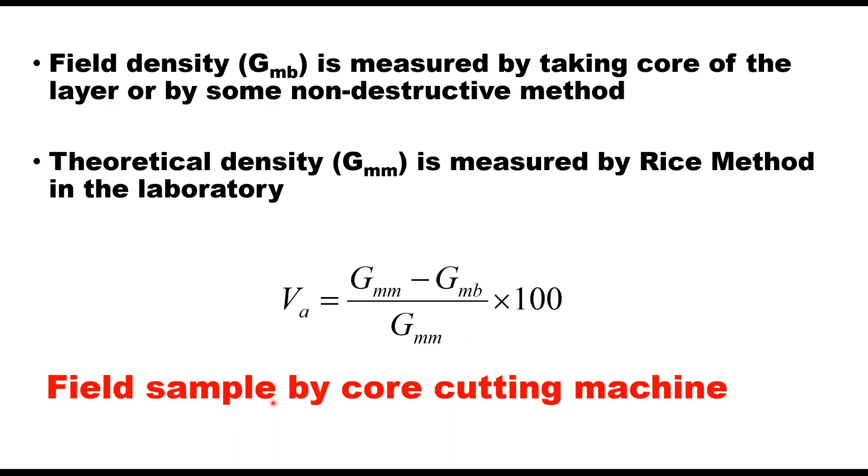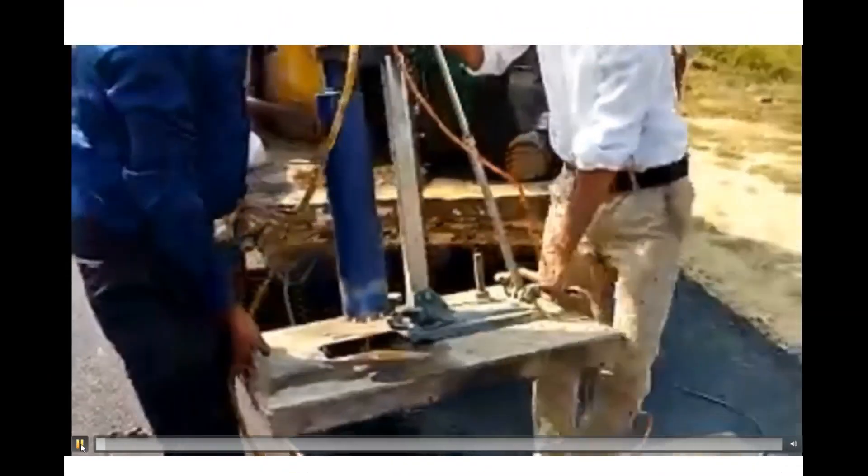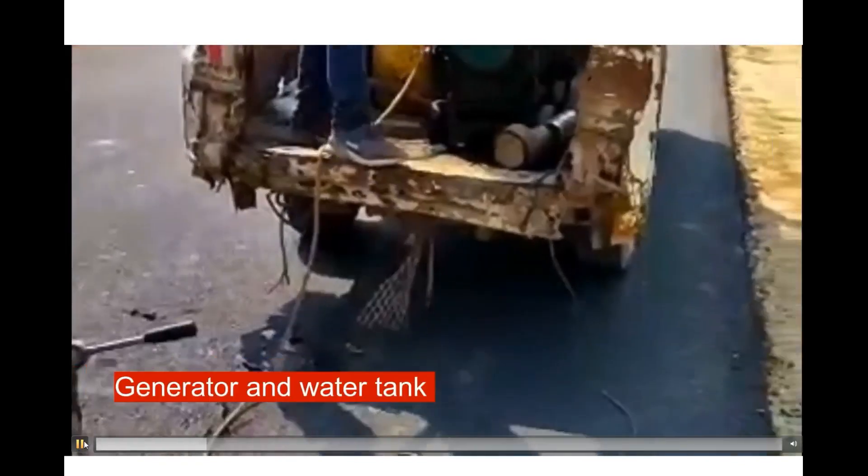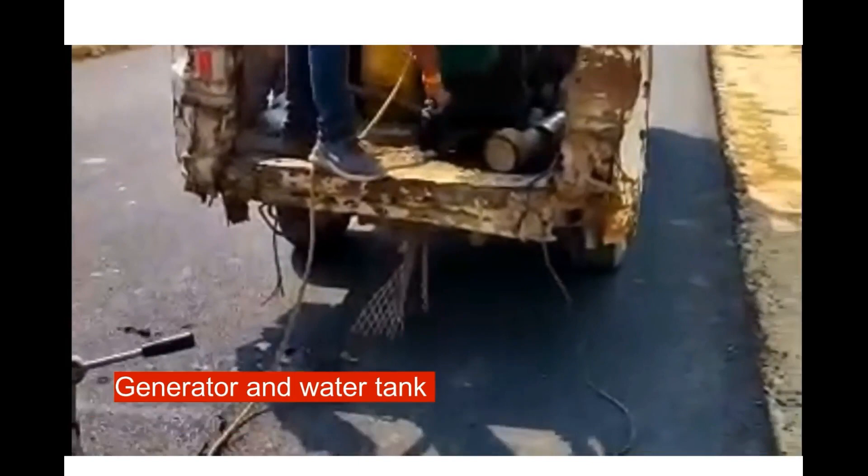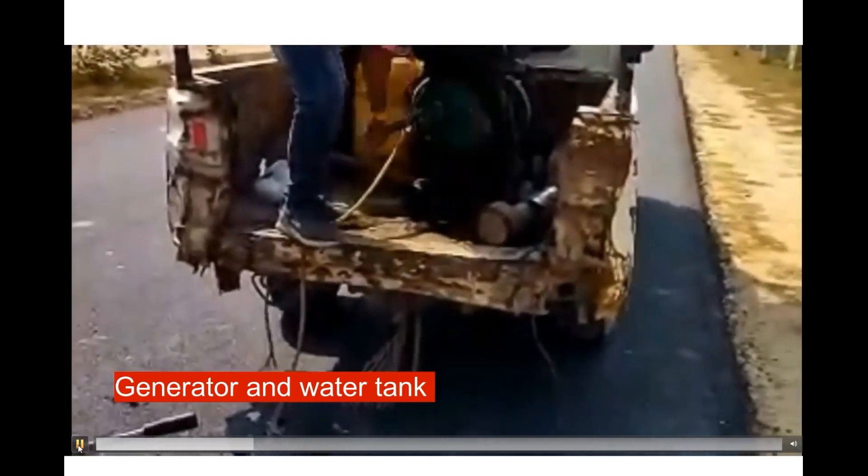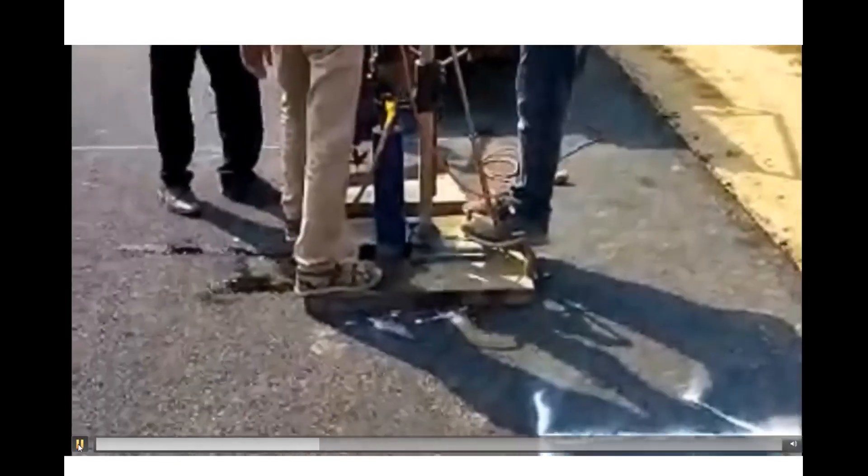Field sample should be taken as far as possible by core cutting machine. To take a core, you need a core cutting machine, a generator, and a water tank. Decide the location where a core is to be taken, place the core cutting machine there, start the generator and water, and then you can start drilling the core.